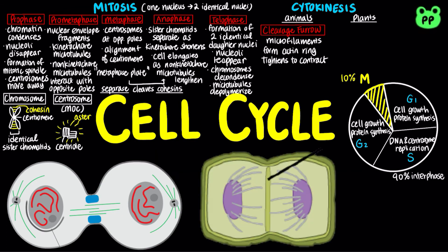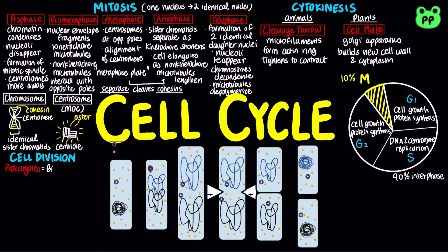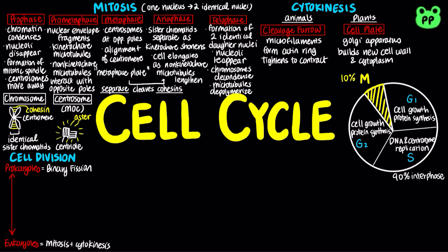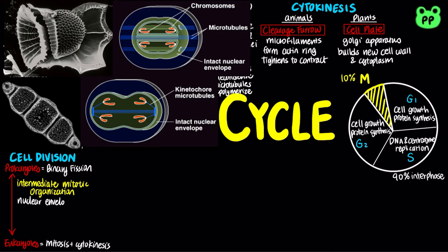In plant cells, which contain cell walls, cytokinesis occurs through a cell plate, in which the Golgi apparatus builds a new cell wall between the two nuclei, forming two daughter cells. Prokaryotes reproduce by a type of cell division known as binary fission, and the two daughter chromosomes actively move apart. Certain protists exhibit types of cell division that seem intermediate between binary fission and mitosis.